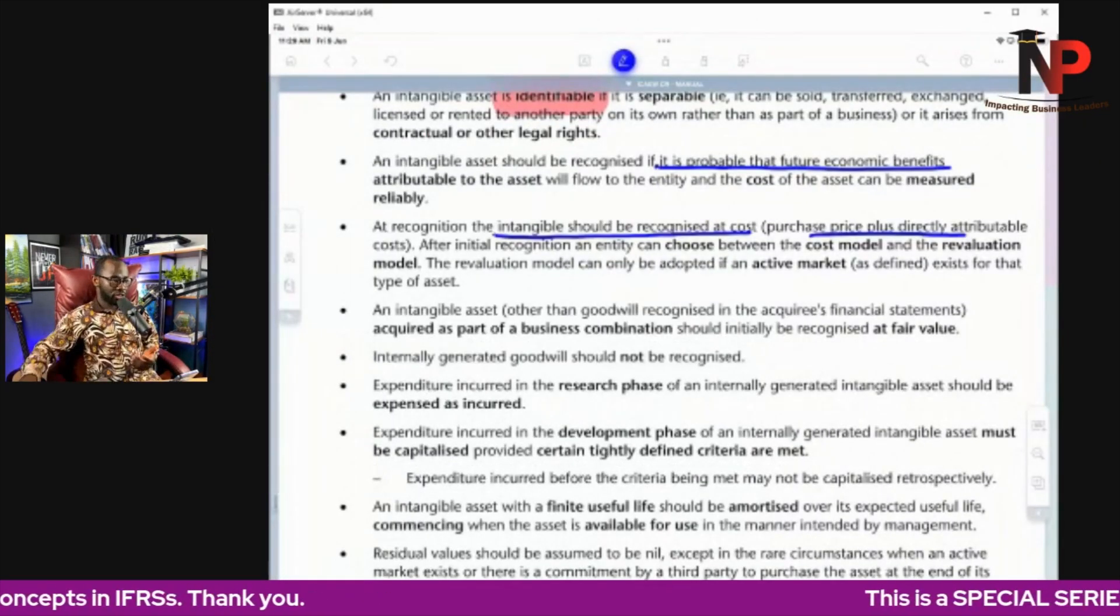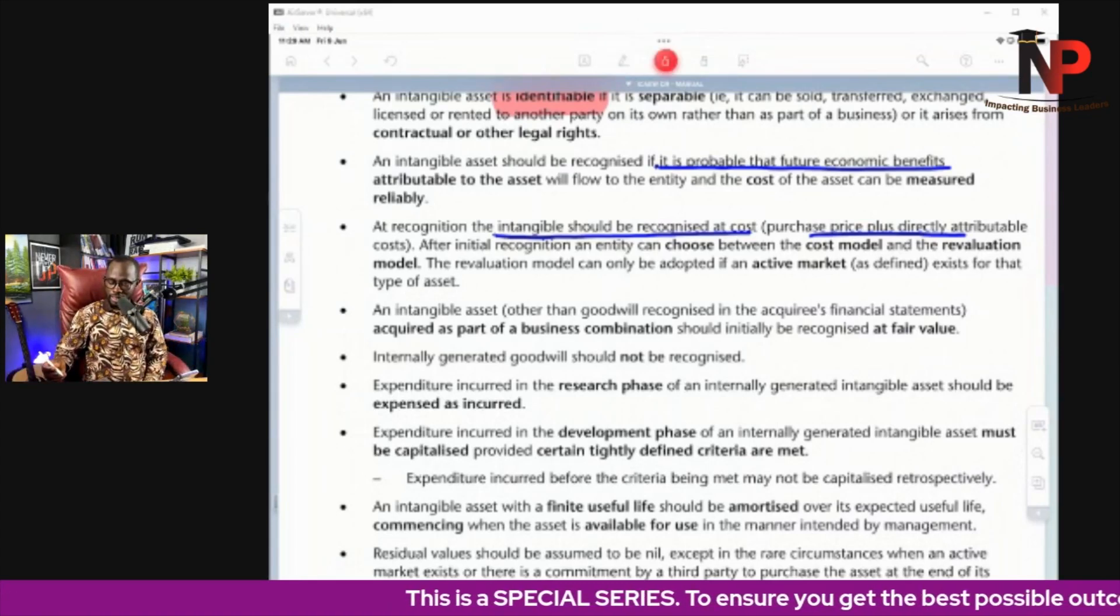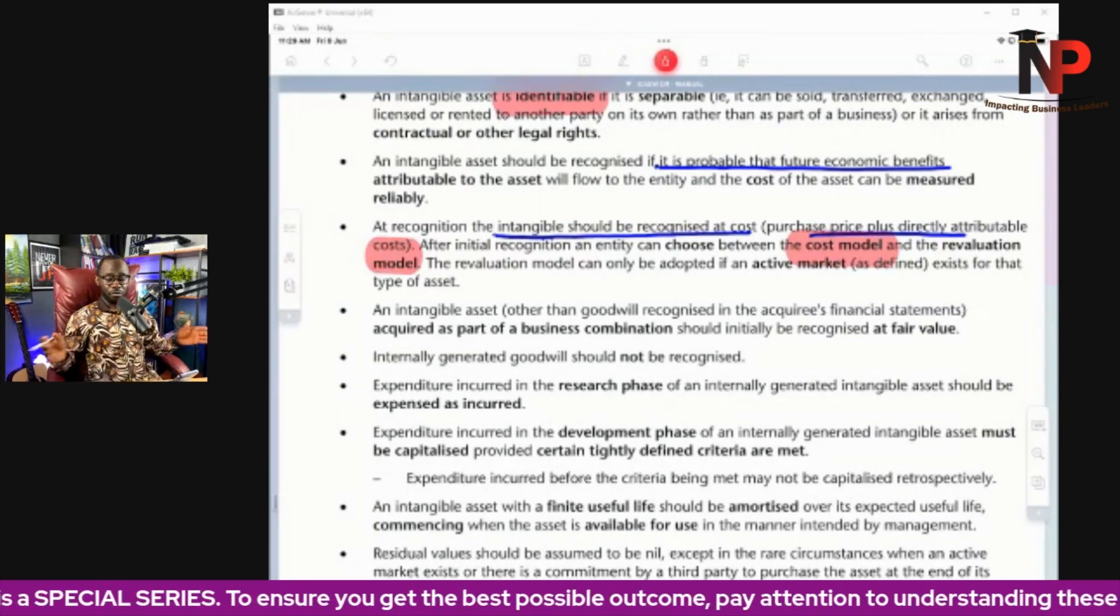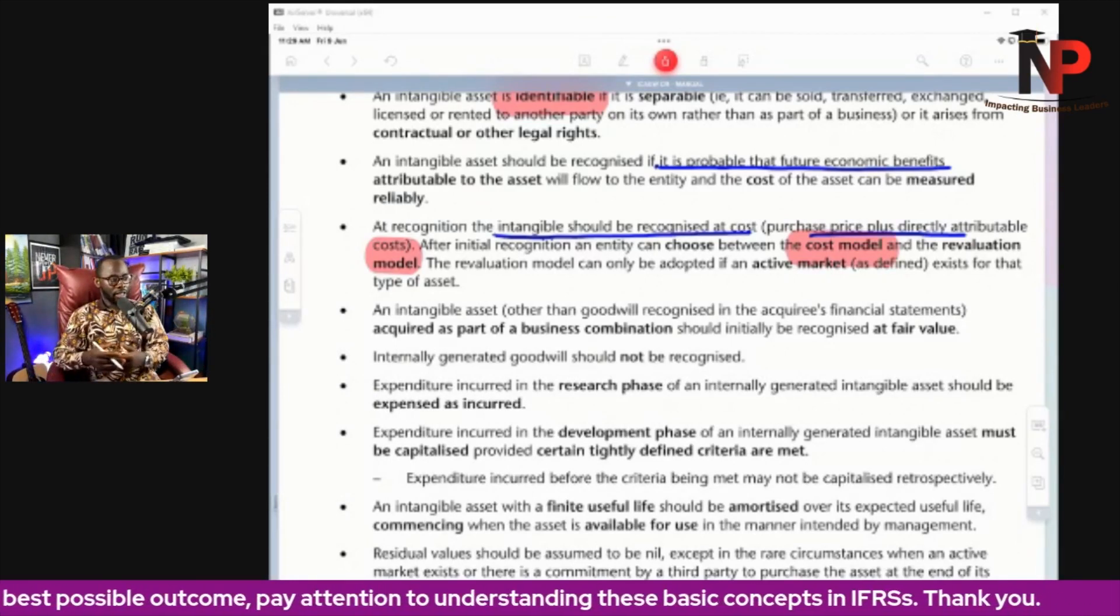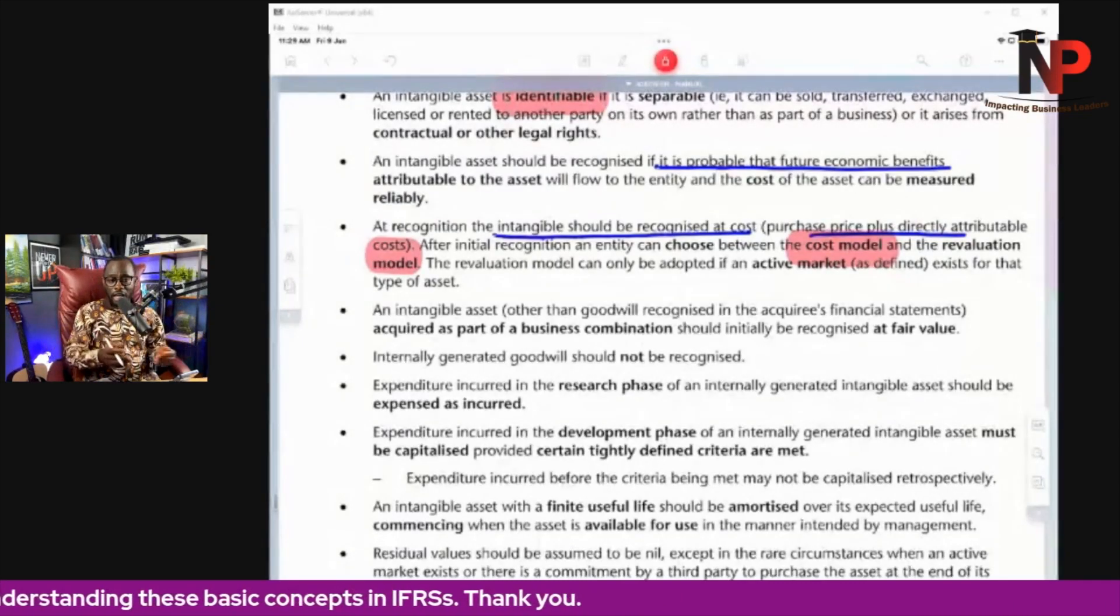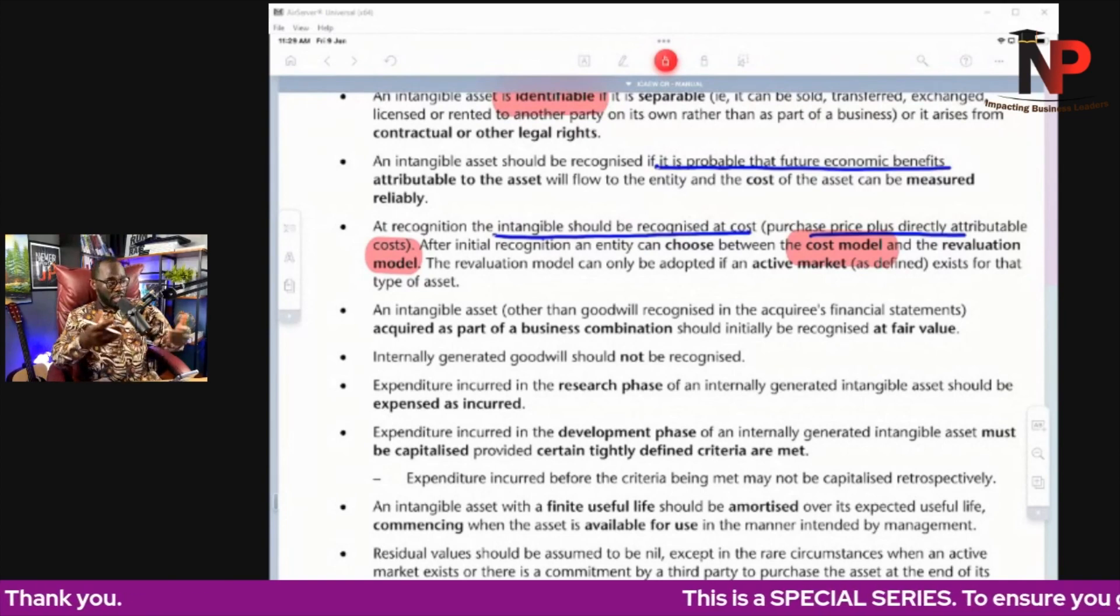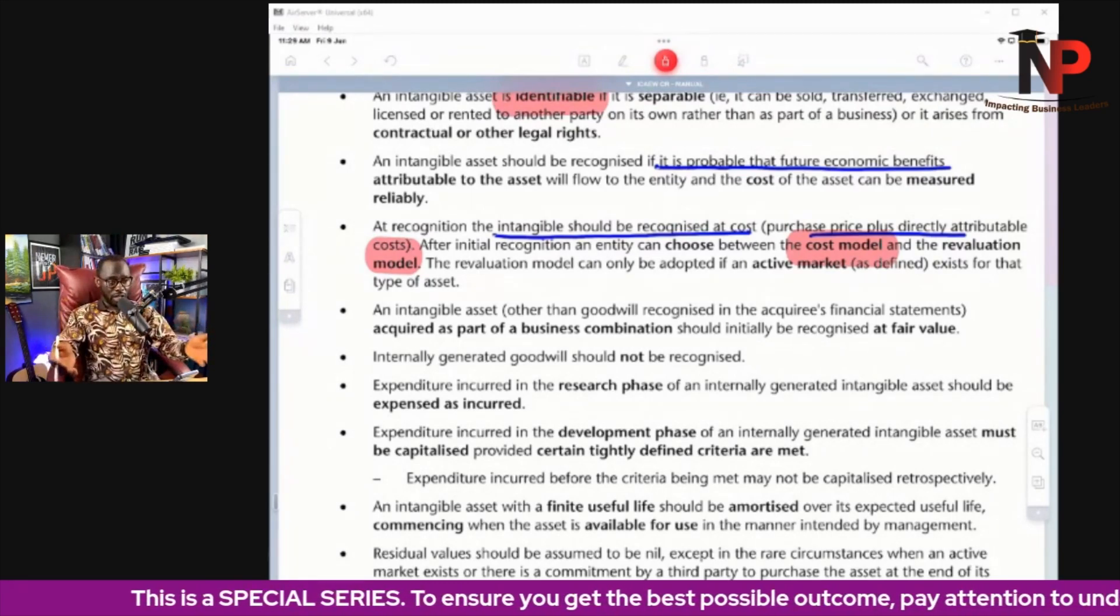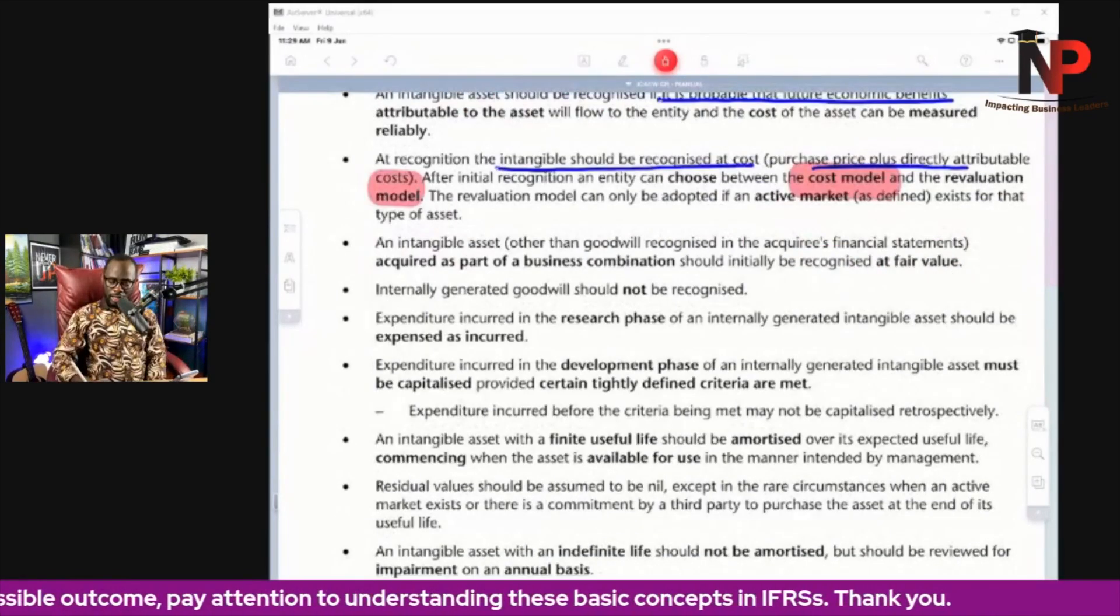Next one. After that initial recognition, just like we discussed in IAS 16, the entity can choose between the cost model and the revaluation model. We've spoken about this already in IAS 16, so I'm not going to talk about it here again. As we mentioned in IAS 16, the revaluation model can only be used if there is an active market and we can determine reliably the fair value of the intangible assets. If not, then the entity will have to apply the cost model.